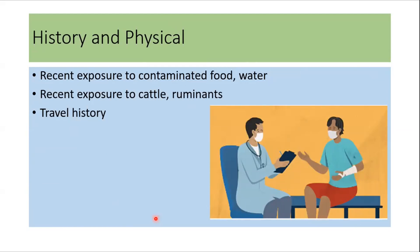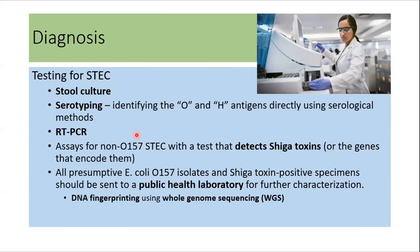For diagnosis, history and physical examination are very important. We need to ask about exposure to contaminated food and water, recent exposure to ruminants such as cattle, and travel history. Diagnosis is made through various lab tests: stool culture can be performed, serotyping can identify O and H antigens, and RT-PCR is one of the most reliable methods — it can identify the bacteria as well as the genes encoding Shiga toxins. All cases should be reported to a public health laboratory for further characterization, including DNA fingerprinting using whole genome sequencing.